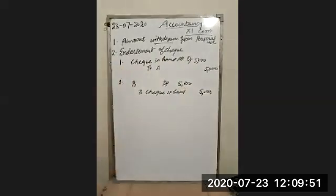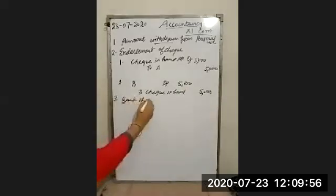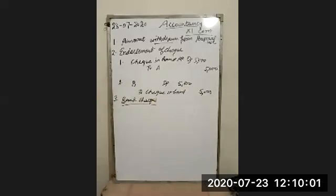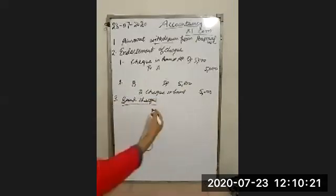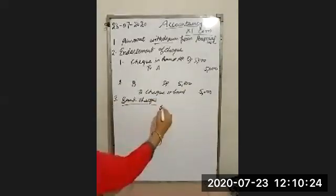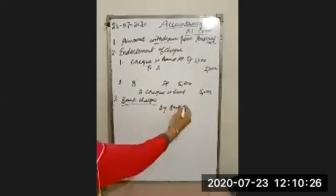The next, third point, is bank charges. Sometimes the bank charges our account for some services, and automatically the amount will be deducted. Bank charges are an expense. If you record the general entry, bank charges are debited and bank is credited. This reduces your bank balance, so it goes on the payment side — credit side — shown as 'by bank charges' in the bank column.